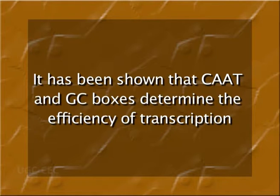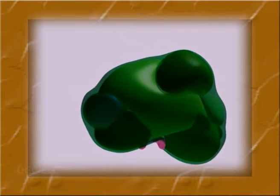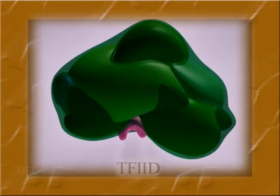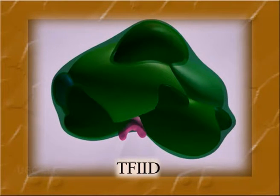Another sequence, GGGCGGGG, also called the GC box, is found in one or more copies at minus 60 to minus 100 base pairs upstream, in any orientation, in several genes. It has been shown that the CAAT box and GC box determine the efficiency of transcription, while the TATA box aligns RNA polymerase at the proper site with the help of transcription factor TF2D and other transcription factors.